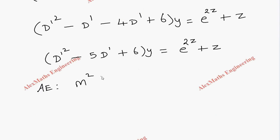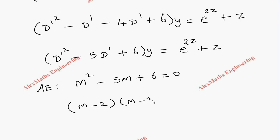Now we have to write the auxiliary equation, which is m² − 5m + 6 = 0. This can be factorized as (m − 2)(m − 3) = 0, so the values of m are 2 and 3.